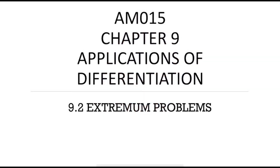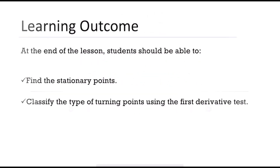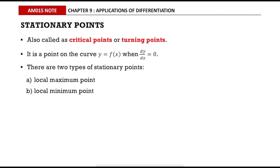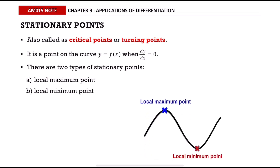In this video we are going to learn about extreme problems. Stationary points are also called critical points or turning points. It is a point on the curve y = f(x) when the first derivative, dy/dx, equals zero. There are two types of stationary points: the local maximum point and the local minimum point.